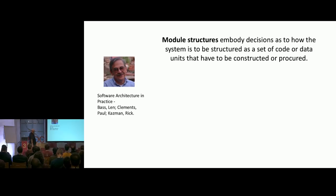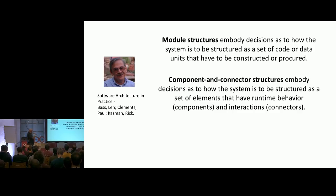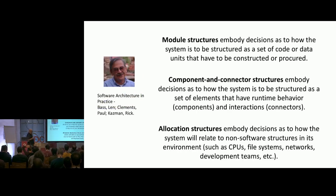Len Bass gives examples of architectural structures: module structures — the units of code or data that go to make up the system; component structures — the boxes-and-lines, how the parts once built connect together; and allocation structures — the physical model of how you're actually going to run this in a production system. So the top is how you build an individual stack, the middle is how those stacks talk to each other, and the bottom is the physical deployment model.